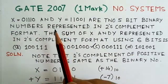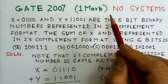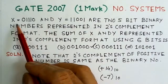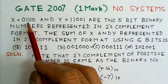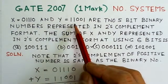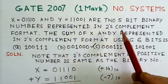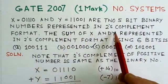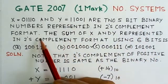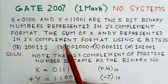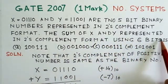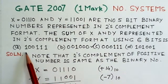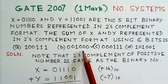We will read out the problem here. It is from GATE 2007, a one mark number systems question. It says that X = 01110 and Y = 11001 are two 5-bit binary numbers represented in 2's complement format. The sum of X and Y represented in 2's complement format using 6 bits is given, and there are 4 options here and we have to find which is the right option.